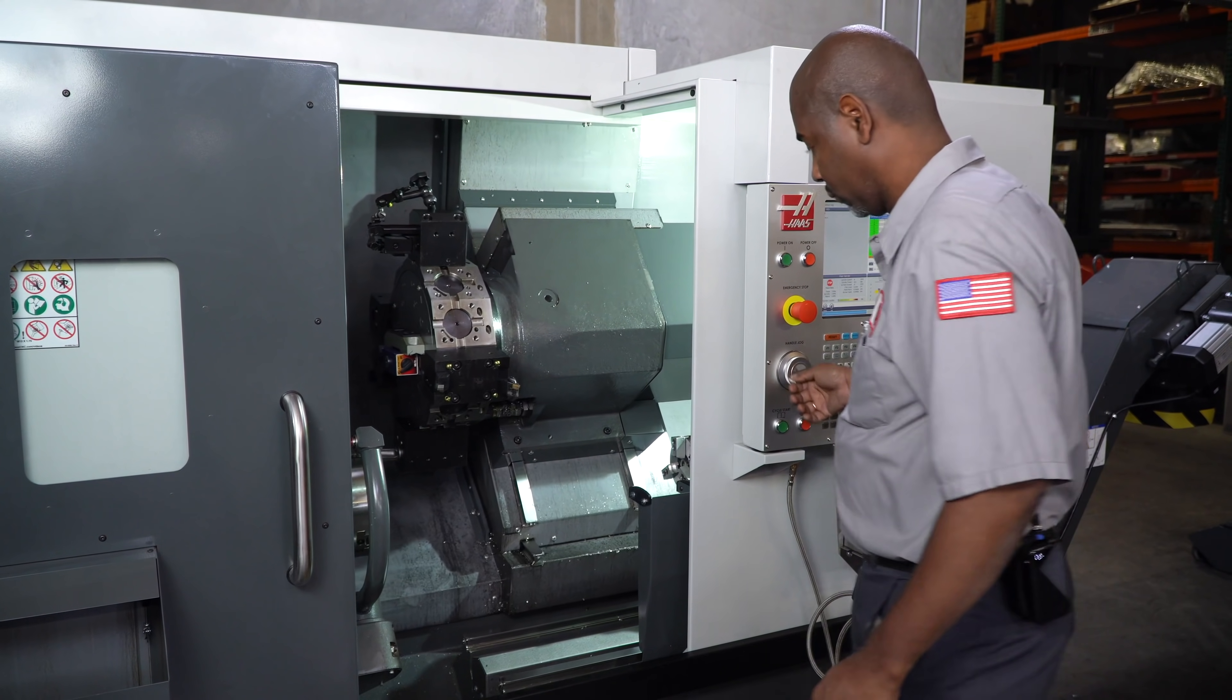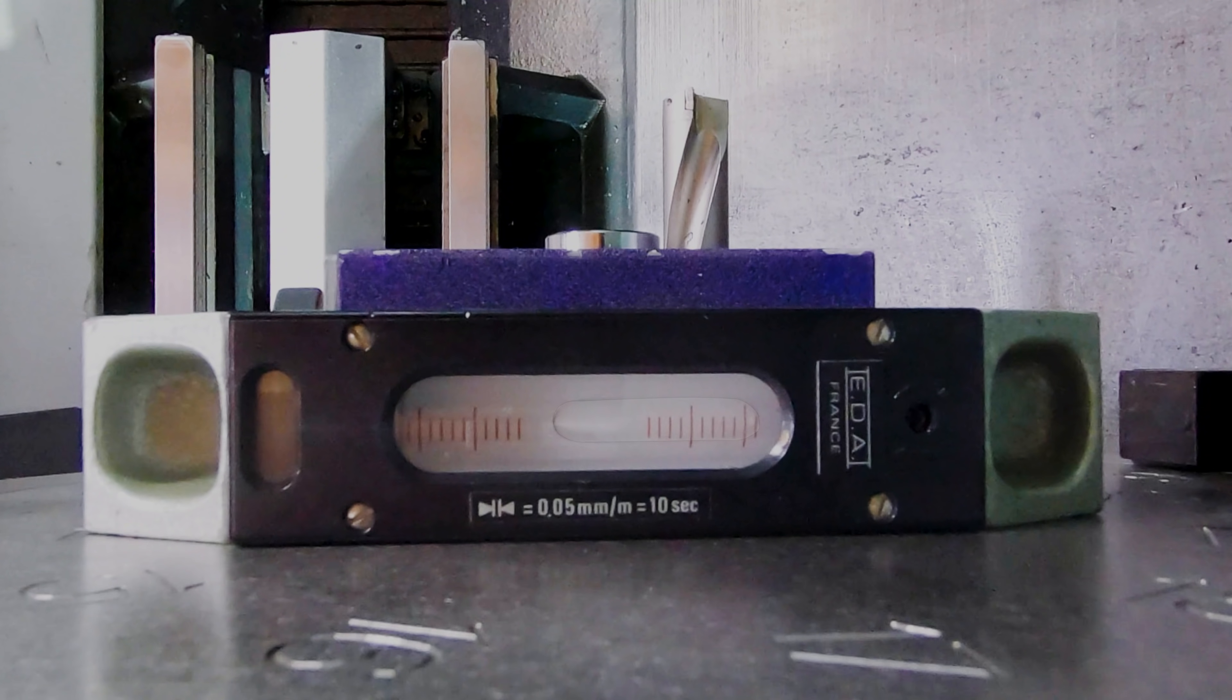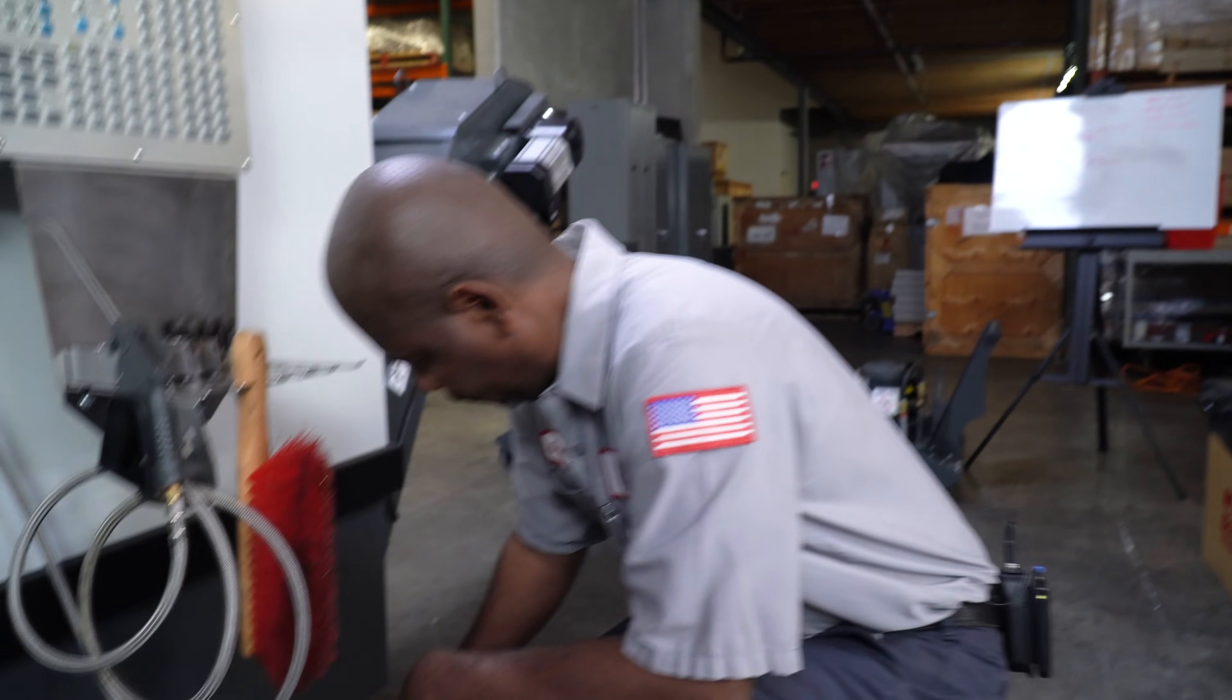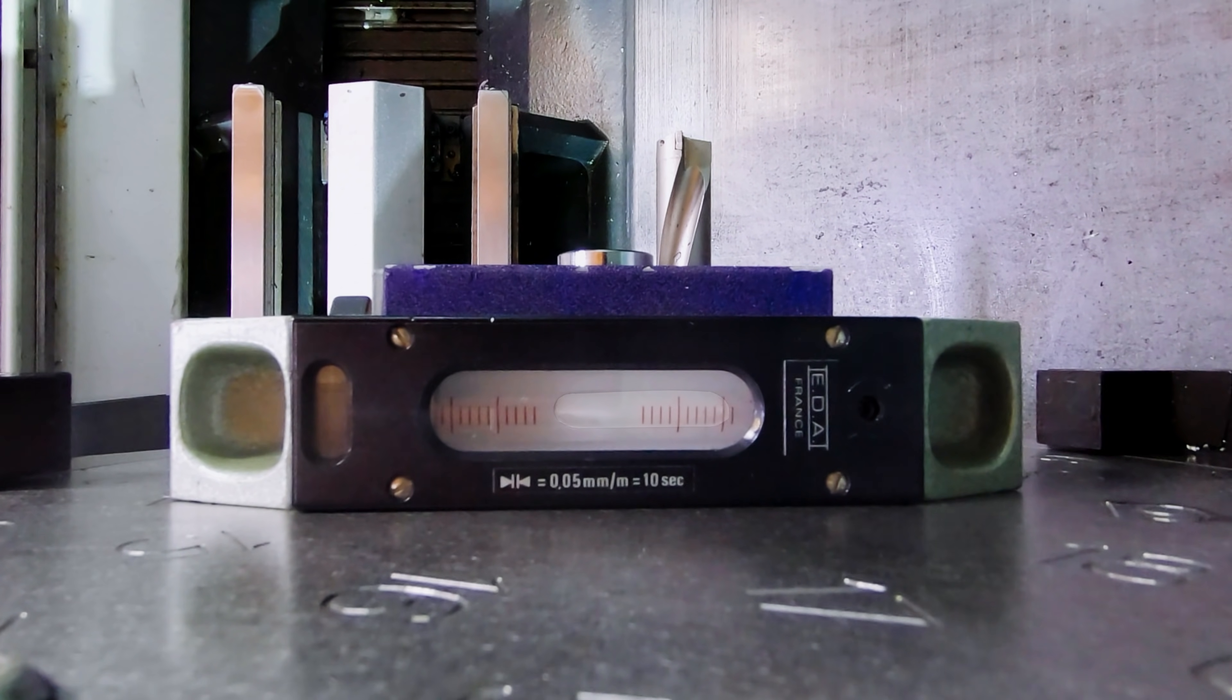Jog the Z axis towards the home position and look at the bubble to see the low point. We can see that the bubble has moved to the right side of the vial, meaning that the rear side is higher than the front. Raise the front right leveling screw to raise the machine until the bubble is in the center of the vial.